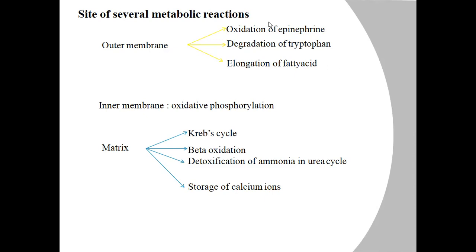Thank you everyone for joining. In this lecture we discussed mitochondria — its outer membrane, intermembrane space, inner membrane, cristae, and matrix. It is the powerhouse of the cell, where the Krebs cycle, electron transport chain, and ATP production all take place.